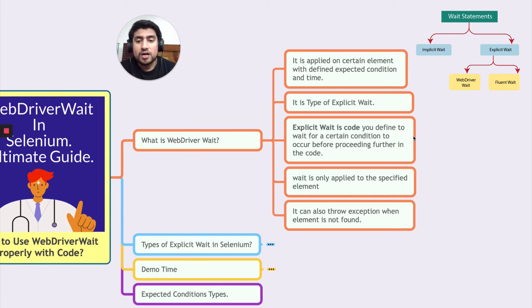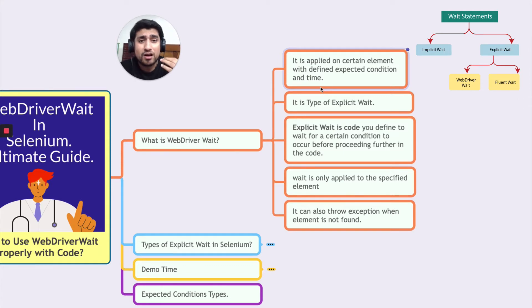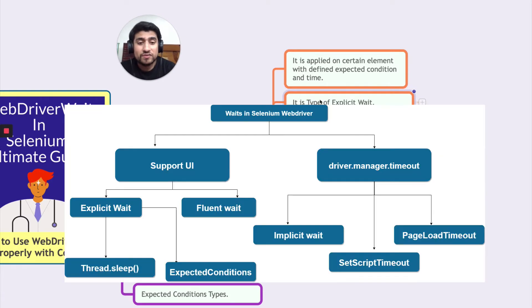What is WebDriverWait? It is basically applied to a particular element with a defined expected condition. Suppose I have a particular element and it is not visible as of now — I've used driver.get and the element is still loading. What I want is a certain expected condition: if it is visible, then wait till it is visible. That's where WebDriverWait comes in. It's a type of explicit wait applied on a particular element to wait for a particular condition.